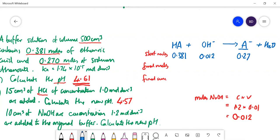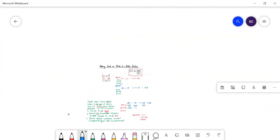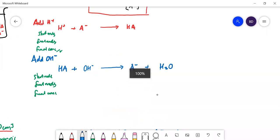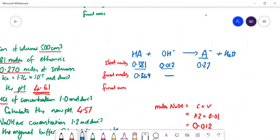Now that means this is going to go down. HA is going to go down by 0.012. So that is going to go down to 0.369. That goes to 0. The amount of A- is going to go up by that much. So that's going to go up by that much. So that's going to go to 0.282.